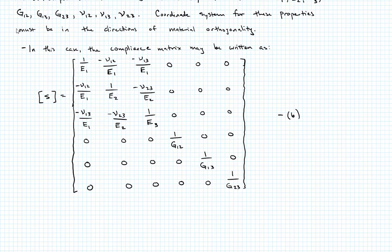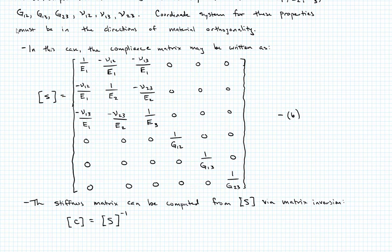If you want the compliance matrix, or rather sorry, the stiffness matrix, can just be computed from this compliance matrix via matrix inversion. And so when we do that, we would say that if we want C, well, that's just going to be S inverse. We'll call that equation seven.